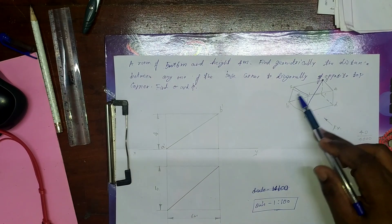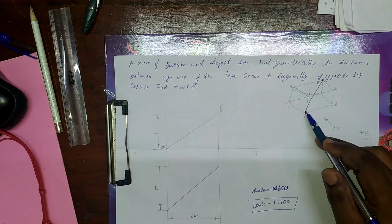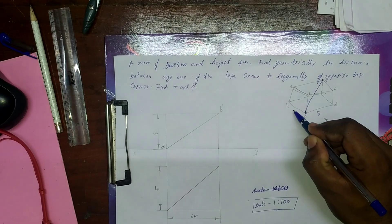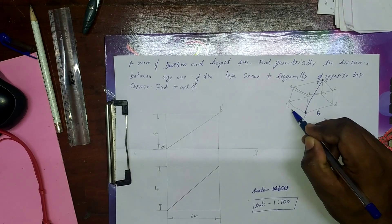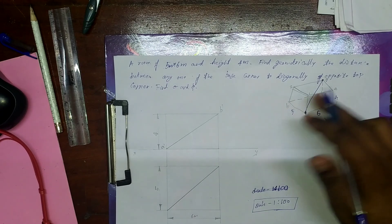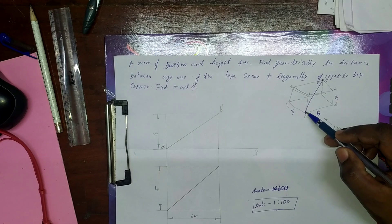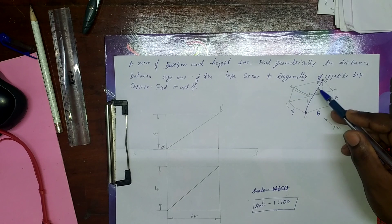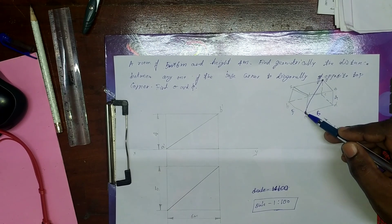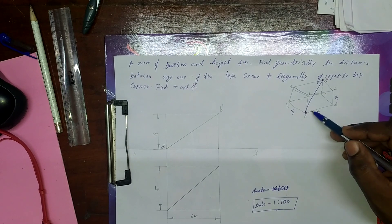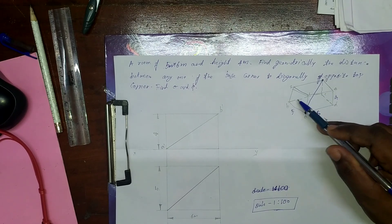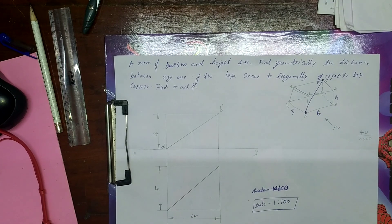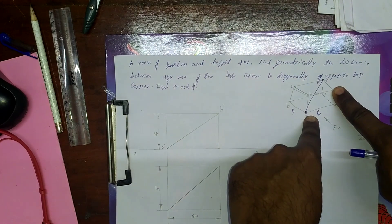This is a simple method. I can draw the isometric view of the room — 5 meter by 6 meter and height 4 meter. Then the distance between any one of the base corners to the diagonally opposite top corner. We need to find the distance between the base corner and the top corner.